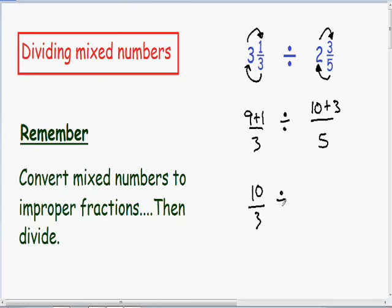And this is being divided with our second fraction, which has a 10 plus 3 in the numerator. And we know that 10 plus 3 is 13. And our denominator stays the same, which is 5.